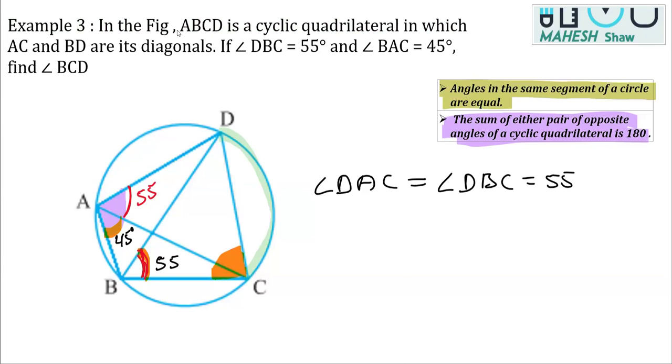Now, once we get this value, we can get this whole angle, the value of this whole angle. The sum, that is DAB, should be sum of these two angles that is 55 degrees plus 45 degrees. So this comes out to be 100, right? This is 55 plus 45 is 100.